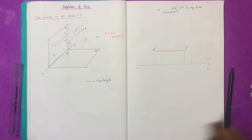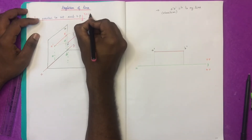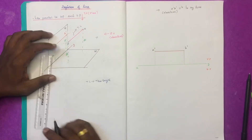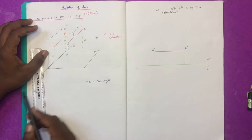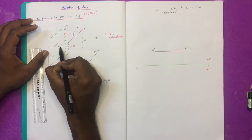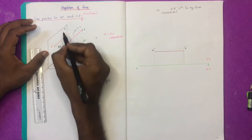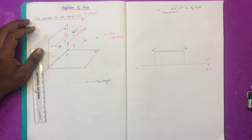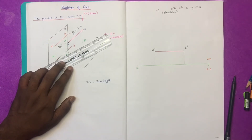This is the front view. As you can see, this is the top view. The top view is also parallel to VP. VP is parallel, and VP has a distance of 25 mm.